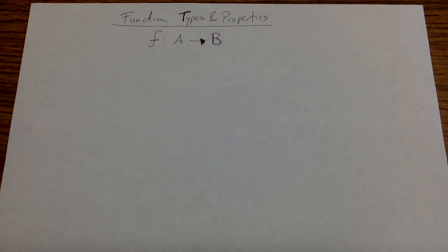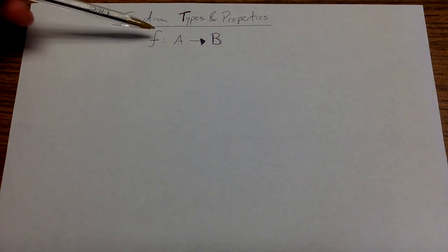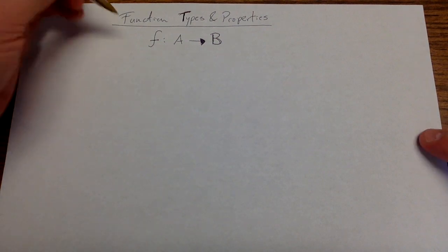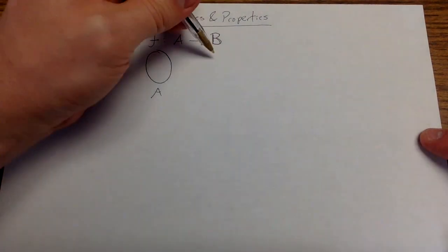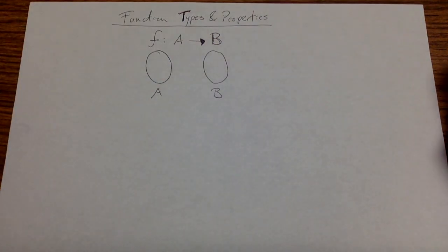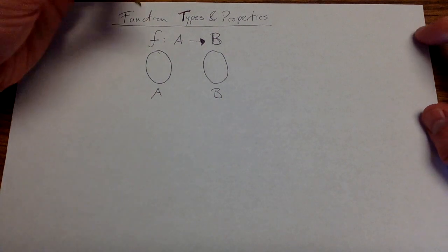Let's talk a little bit about different types of functions and their properties. If I say that f is a function from A to B, I'm meaning that I have a domain A and a codomain B, and for every element of A, I've associated it with a unique thing on the right in B.